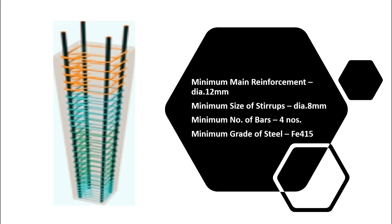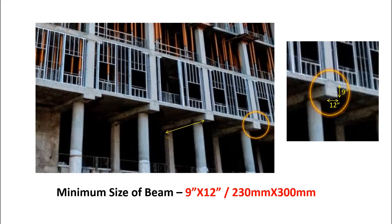The minimum number of bars in rectangular and square columns should be four numbers, and if you are using a circular column then it should be six in numbers. Next, minimum grade of steel should be Fe 415. Next, the minimum size of the beam should be 9 inch by 12 inch, that is 230 mm by 300 mm.